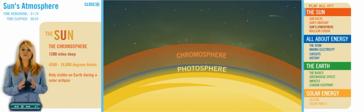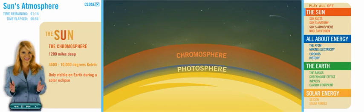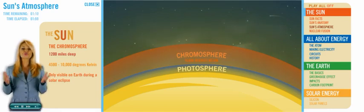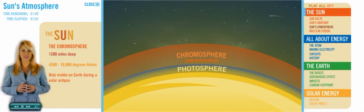The chromosphere extends from the photosphere about 1,200 miles. And as we move from the top edge of the photosphere outward, the temperature rises from 4,500 degrees Kelvin to about 10,000 degrees Kelvin.